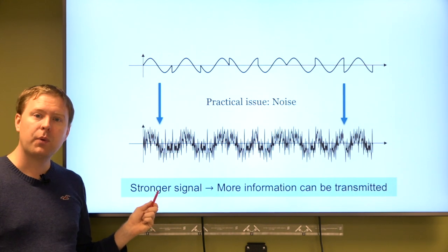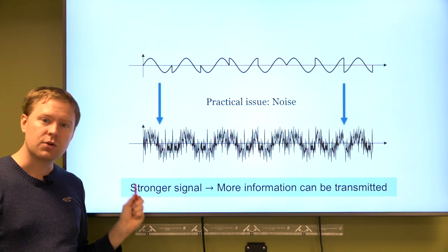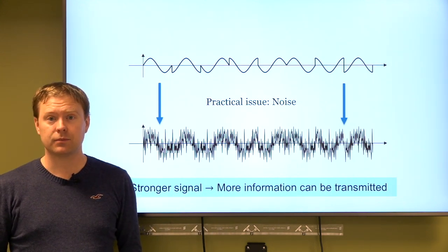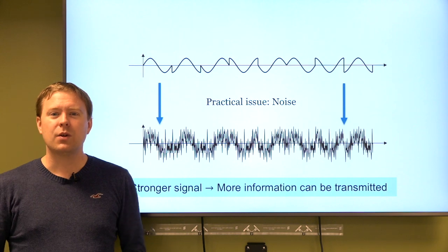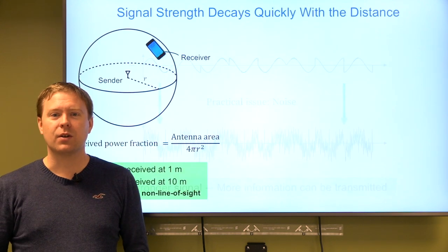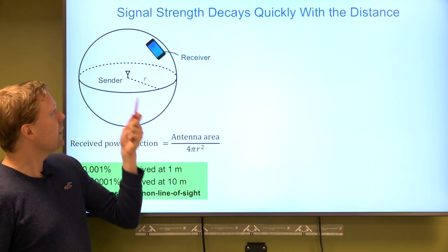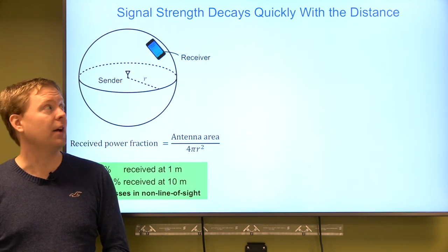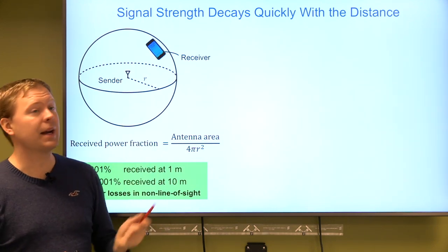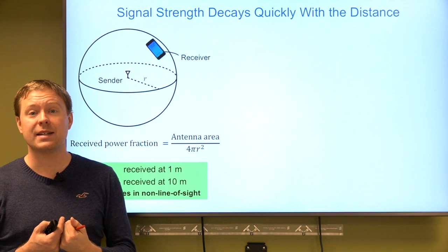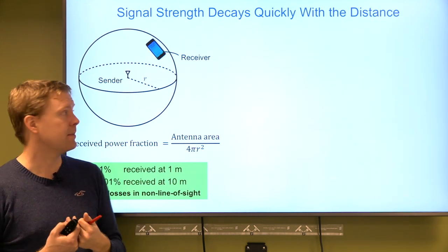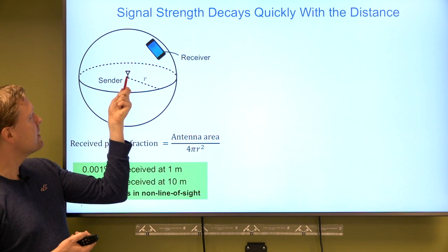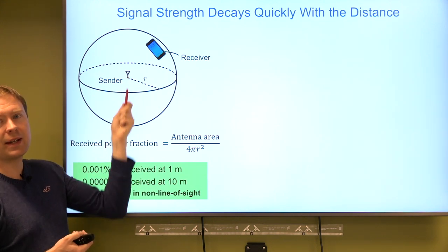The main point is: a stronger signal allows more information to be transmitted. So why don't we have a strong signal all the time? Well, it comes down to the basics — signals lose their strength quickly with distance.